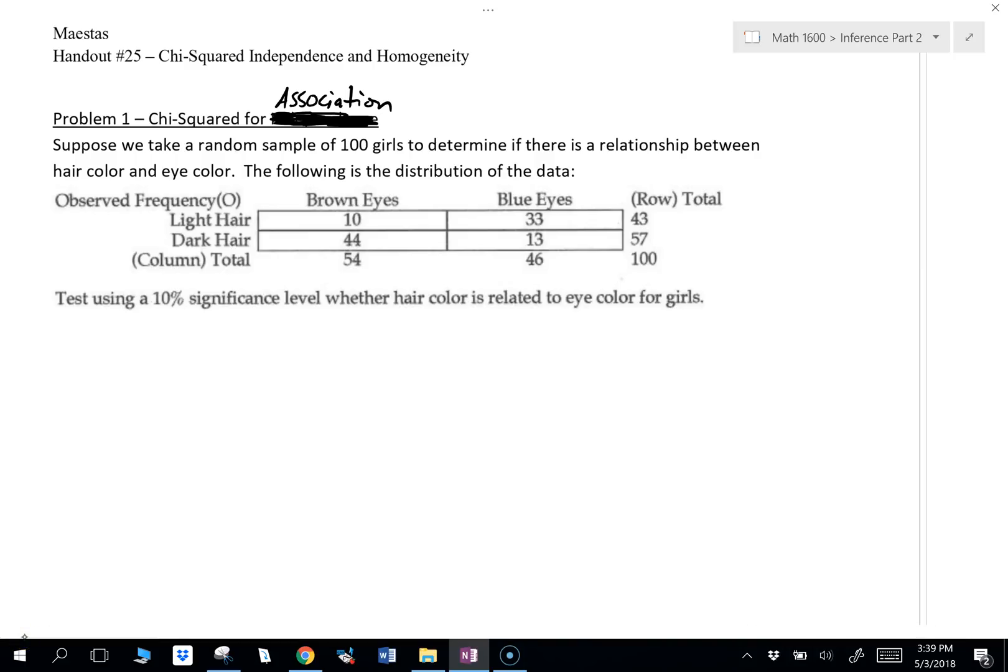This first one is going to be the chi-square test. Now you can use two terms. They use two terms in different books all the time. You could call this either a chi-square test for independence.